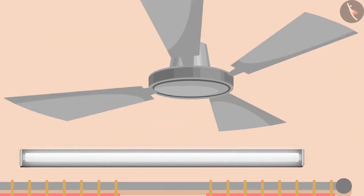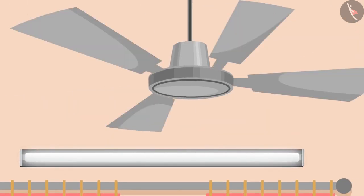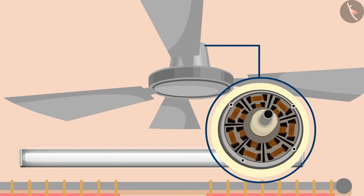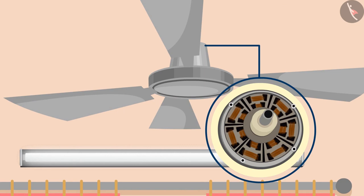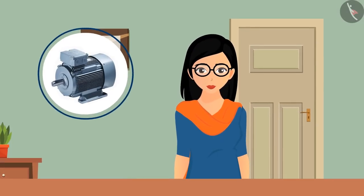But what happens when this electricity flows into a fan and it starts rotating? We have heard most often that there is a motor inside the fan which helps it in rotating. Now the question arises: what exactly is there inside this motor?